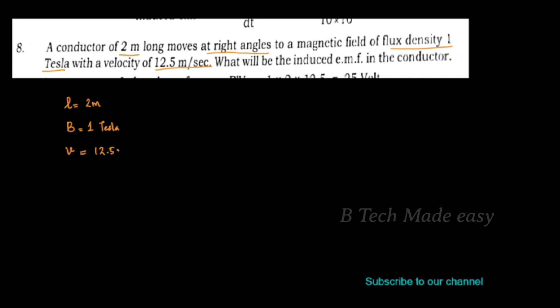To find the induced EMF of the conductor, we set up the data. L, the length of the conductor, is at right angle. Flux density B is 1 tesla. Velocity V is represented by the letter small v and is equal to 12.5 meter per second. The EMF equation is E = BLV sin θ.